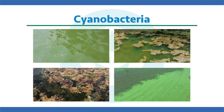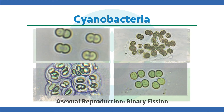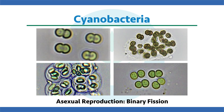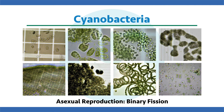Now let's cover some phyla-specific modes of reproduction. First, cyanobacteria only reproduce by asexual forms. The most common way is binary fission — one cell splits into two identical daughter cells. This can happen quite rapidly under the right conditions, with cells just dividing and dividing repeatedly, which forms those big blooms out in the water.